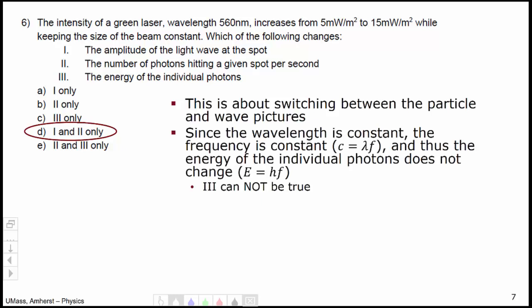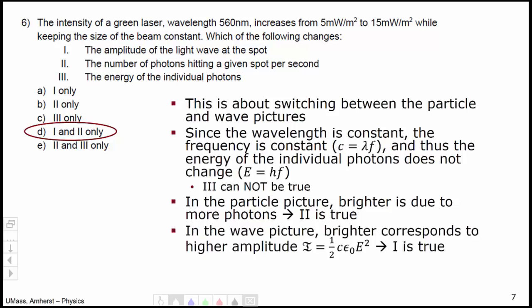Since the wavelength is constant, 560 nm, the frequency must be constant. And thus, the energy of the individual photons also cannot change, which means that option 3 cannot be true. In the particle picture, a brighter light higher intensity is due to more photons, which means number 2 must be true. In particular, the number of photons hitting the spot must increase. In the wave picture, higher intensity corresponds to higher amplitude. In particular, we have the equation i equals one half c epsilon naught e squared, which implies that 1 is true.